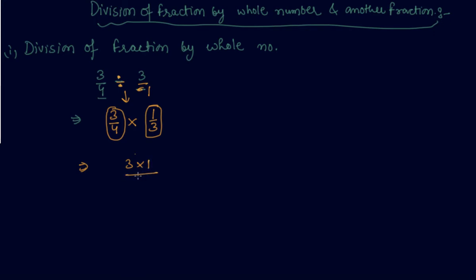We multiply numerator with numerator and denominator with denominator. This gives us 3 by 12, and on dividing the numerator and denominator by 3, what we get is 1 by 4. So this is the answer to the question based on division of fraction by whole number.